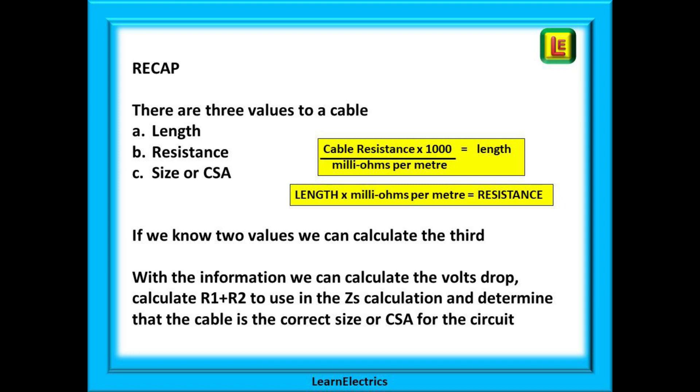With all the information that we now have that relates to the cable we can do a number of things. We can calculate the volts drop in the cable. In other words how much voltage is lost in the copper conductors. We can calculate R1 plus R2, the resistance of the cable. And this can be used in our ZS calculations later on. Also we can determine that the cable is the correct size for safety and economy.